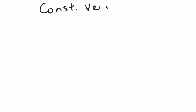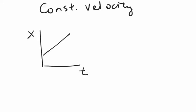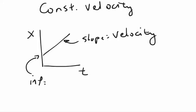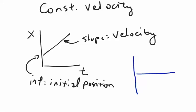Let's first refresh our memory about constant velocity. When we have constant velocity and we graph position versus time, we see that the graph is linear. On that linear graph, the slope is equal to the constant velocity of the object, and the intercept represents the initial position. When we graph velocity versus time, because the velocity is constant, we have a positive constant velocity. Whatever the slope is of the position-time graph is the velocity on the velocity-time graph.